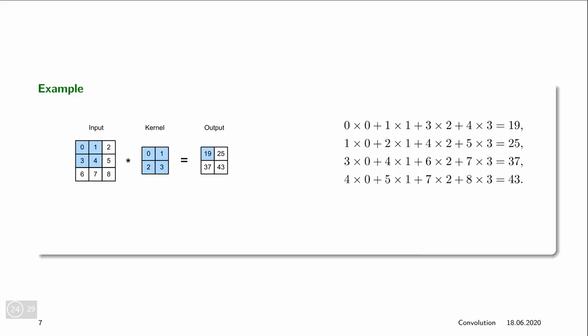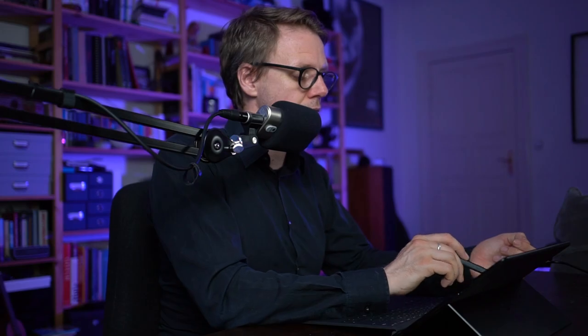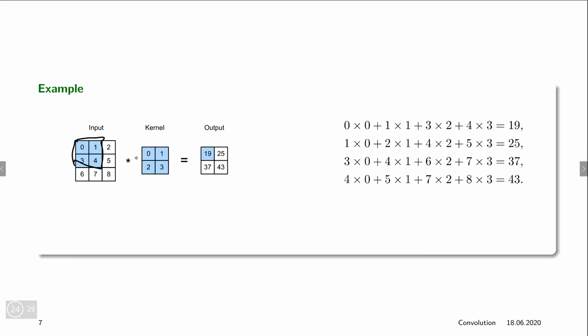Let's look at an example for the single channel case. So we assume that we have a single input channel and a single output channel and also the kernel thus only has a single channel so it's only two dimensional. The way the output is being computed is by taking our input image, placing this filter or kernel on top of the top left corner, and multiplying each value in the kernel with each value in the input and summing up the corresponding values.